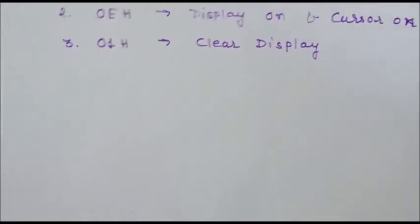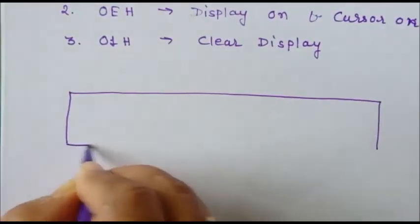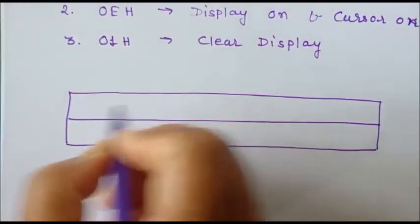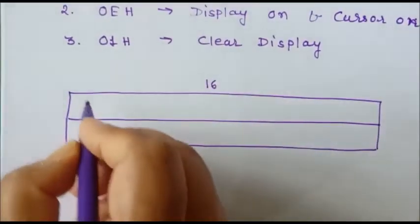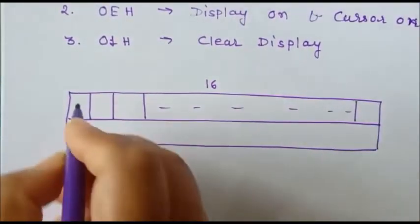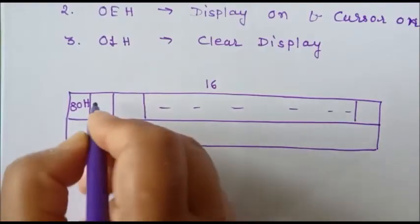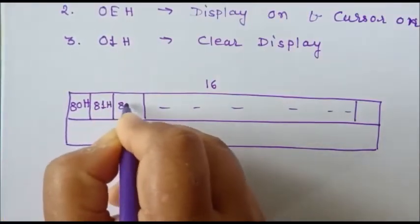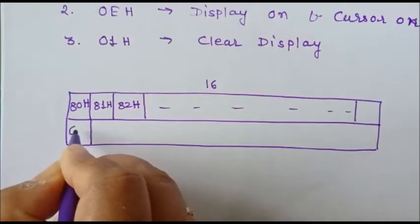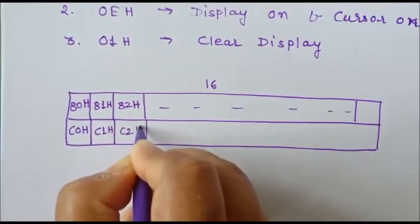The next important commands relate to the address of each character position. In a 16 by 2 LCD, each character position has a unique address. The address of the first row starts from 80h, followed by 81h, 82h, and so on up to the 16th position. The first character position of the second row has address C0h, followed by C1h, C2h, and so on.